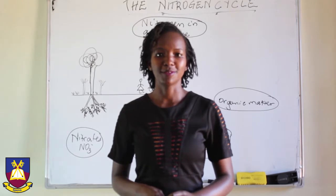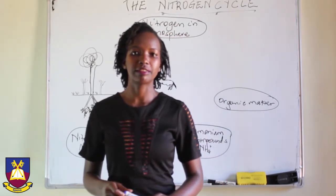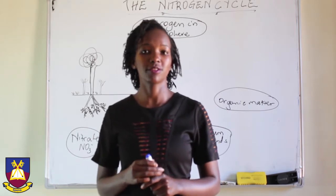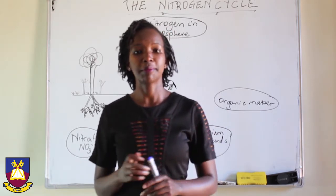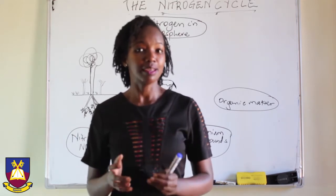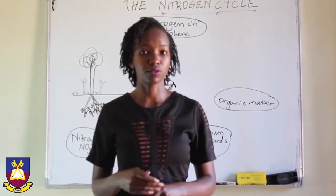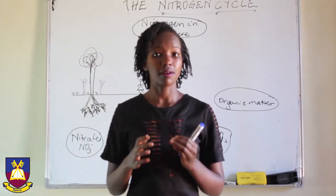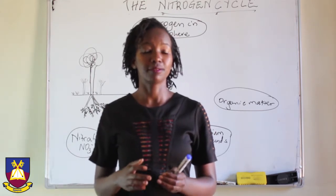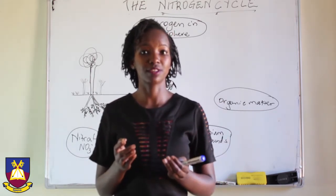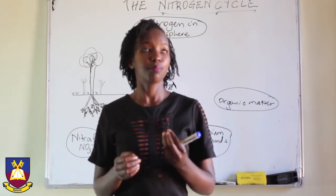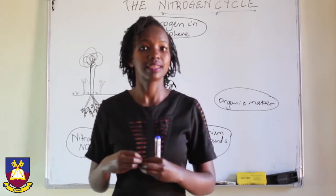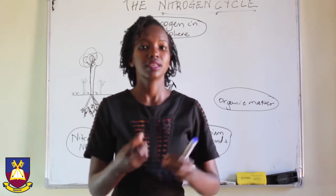Hello and welcome to today's video lesson. Today we're going to talk about the nitrogen cycle as a continuation of our nutrient cycles. Remember we have major elements required for all animals to be alive — that is to say oxygen, carbon, nitrogen, and hydrogen. They are very key, and unfortunately they can be found within the atmosphere.